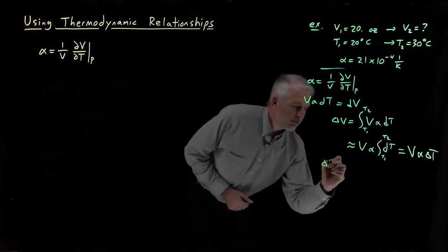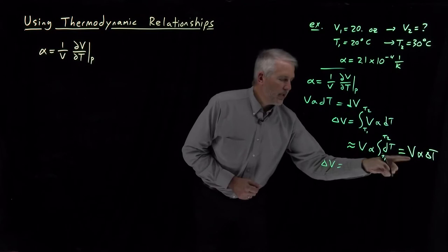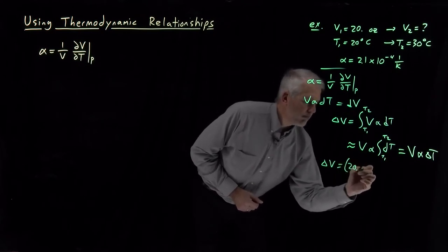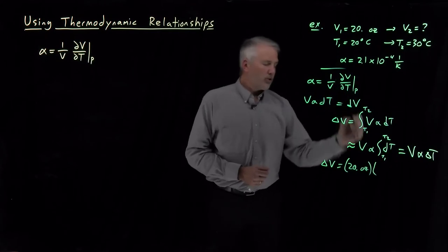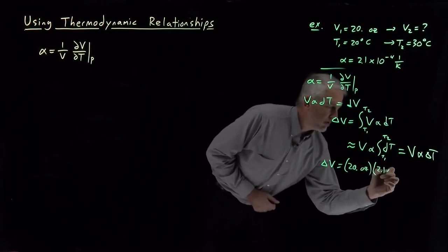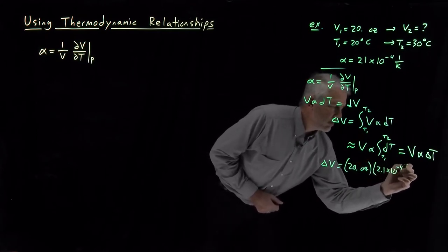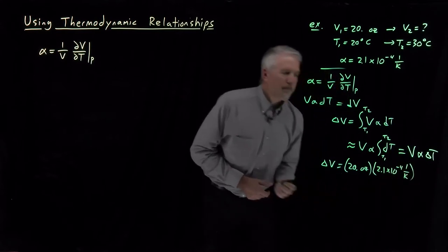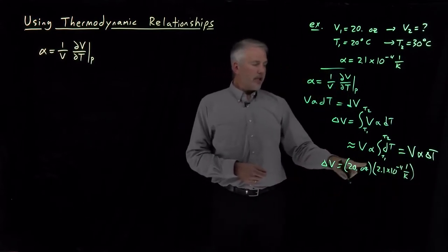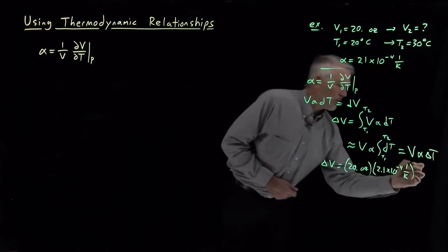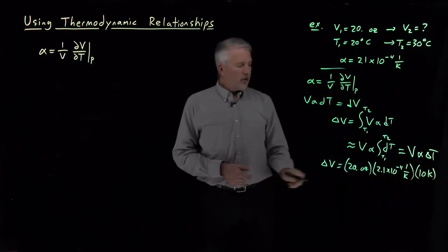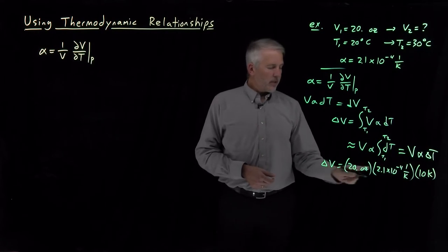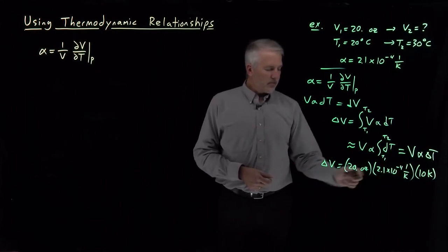Then the change in volume is going to be the initial volume times the thermal expansion coefficient, 2.1 times 10 to the minus 4 per degree, and then the temperature change, 10 degrees Celsius or 10 degrees Kelvin. And if I multiply those numbers together, 20 times 10 times this small number.